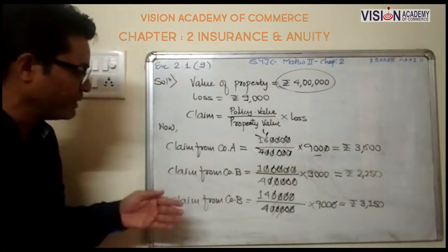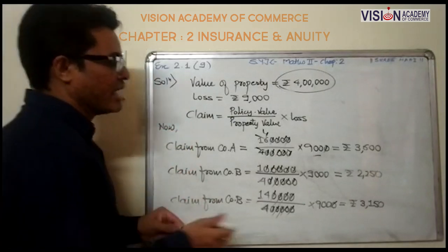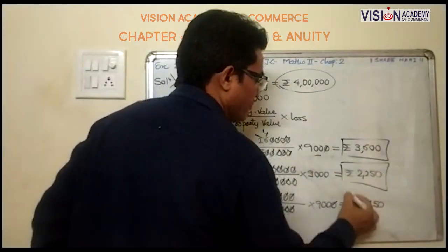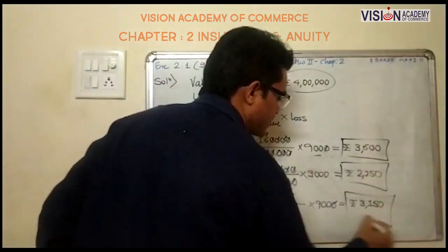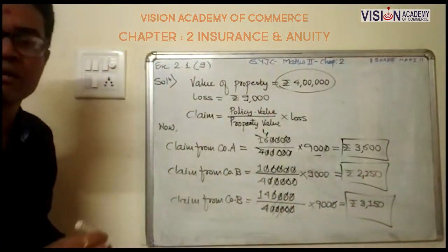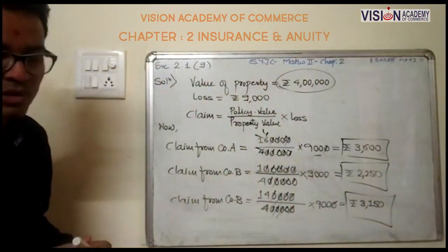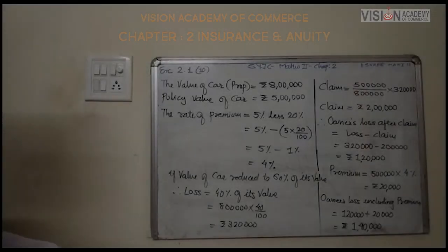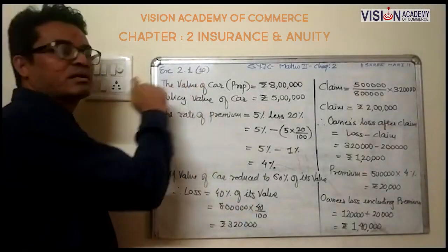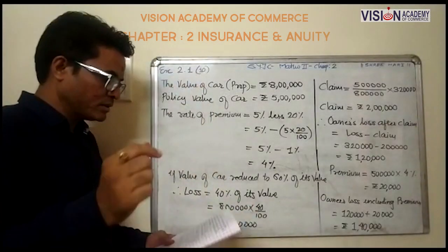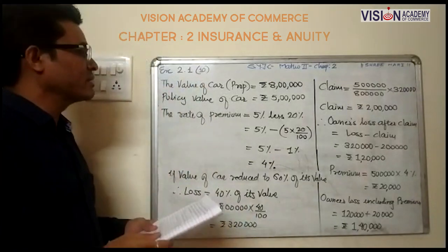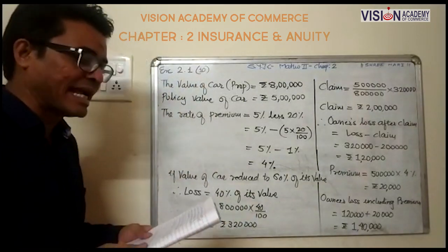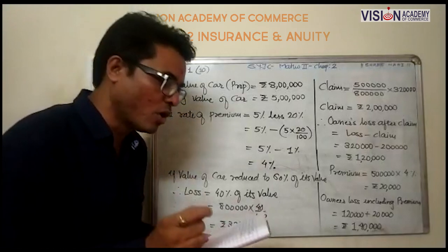These are the amounts received as claims from the three companies A, B, and C. Now your next question number 10.